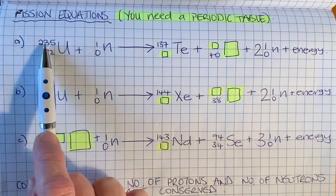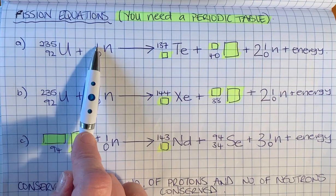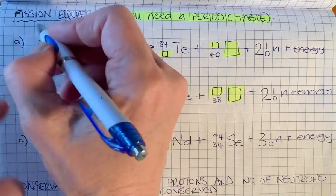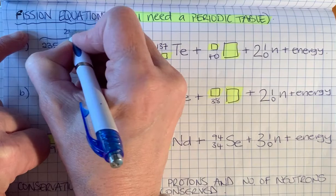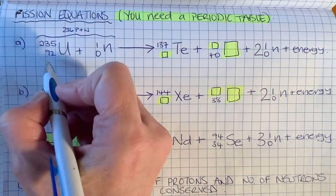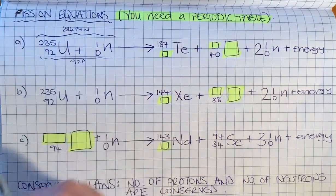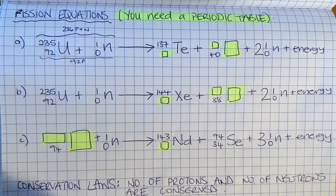On this side we have a total mass number of 236, so there are 236 protons plus neutrons. Here we've got 92 protons, so on this side we have to have 92 as well.